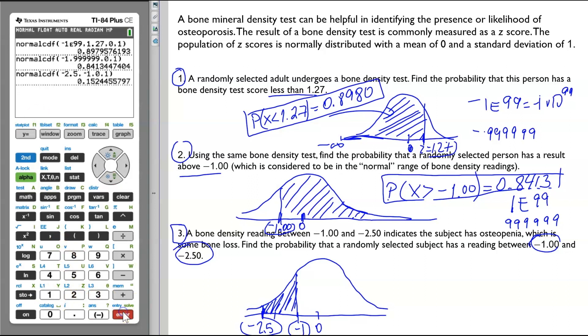Enter again. The area that is located between negative 2.5 and negative 1 is equal to 0.1524. Or, we can say that there is 15.24% that a randomly selected subject will have a reading between negative 1 and negative 2.5.